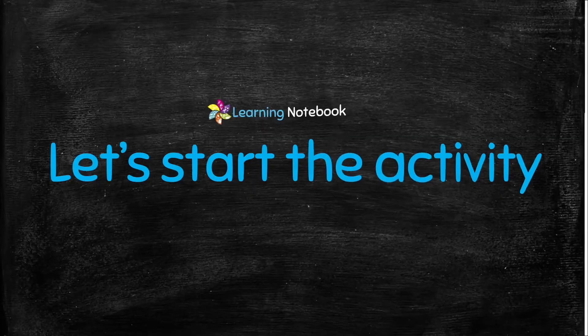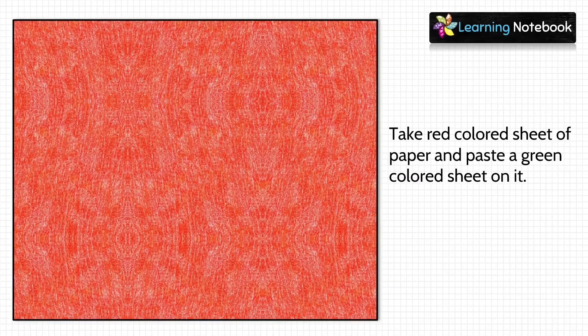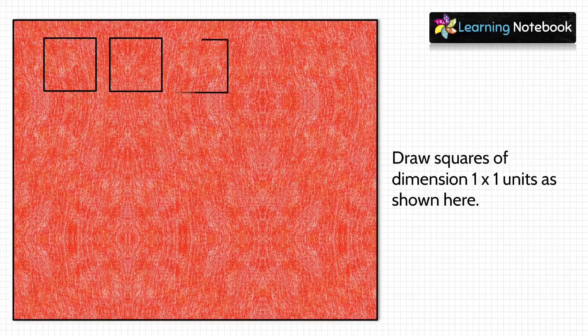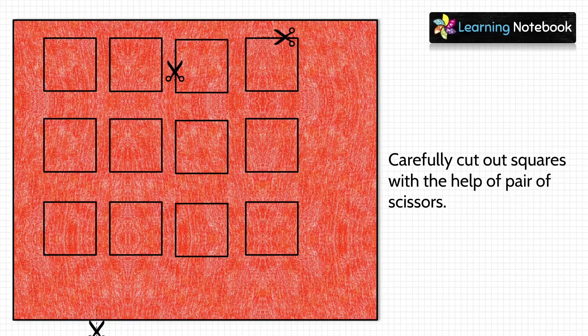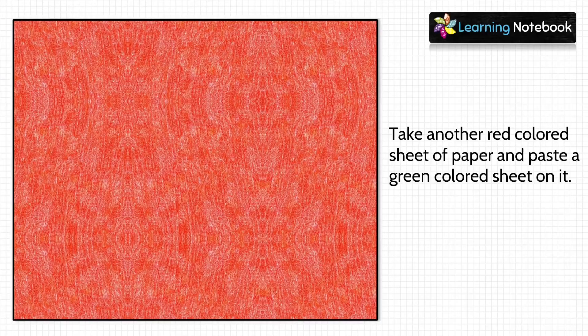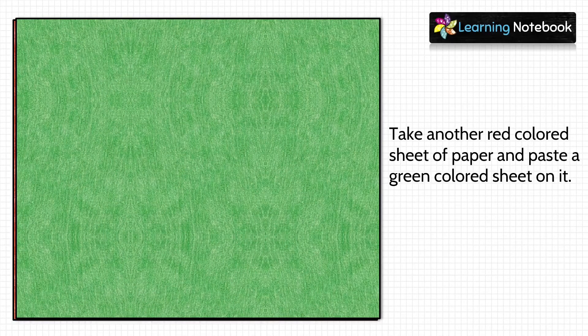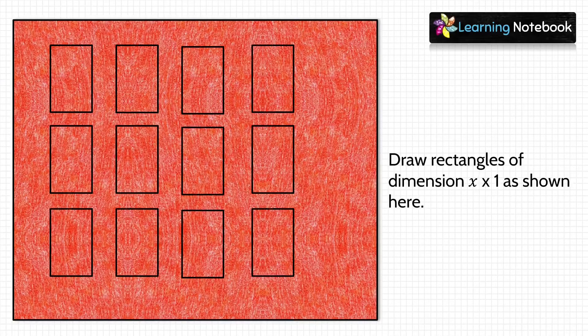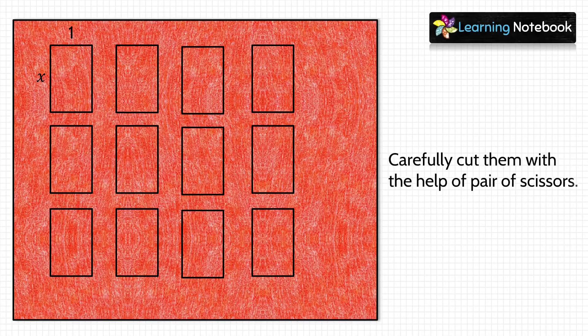Now let's start with the activity. In the first step, take a red colored sheet and paste a green colored sheet on it. On this, draw squares of dimension 1 by 1 units as shown here, and then carefully cut out these squares using a pair of scissors. In the next step, take another red colored sheet and paste a green colored sheet on it. Draw rectangles of dimension x by 1 on this sheet as shown here, and then carefully cut out these rectangles with the help of a pair of scissors.